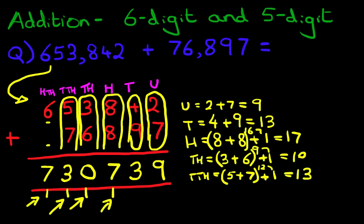And, we have our answer. Let's write this down. The answer is seven hundred and thirty thousand, seven hundred and thirty-nine. That is correct. That is how we do addition of a six-digit and a five-digit number using the vertical format.